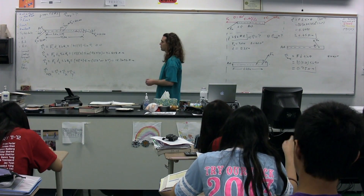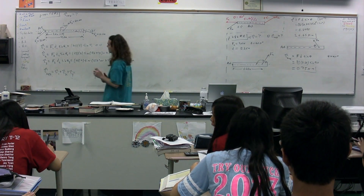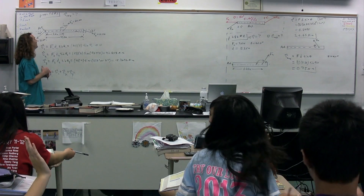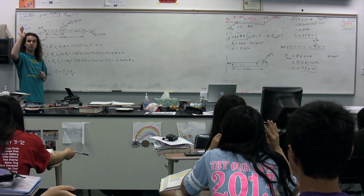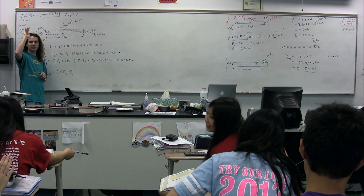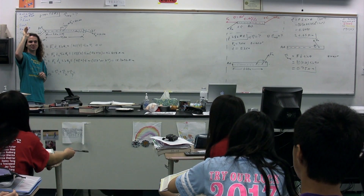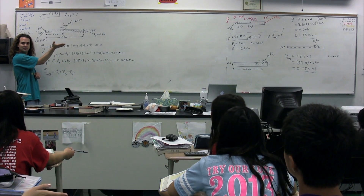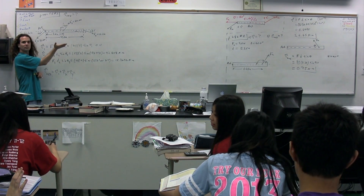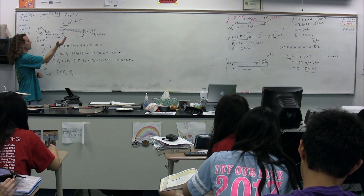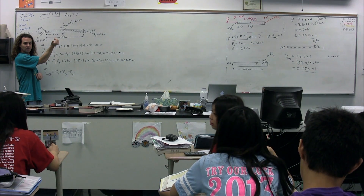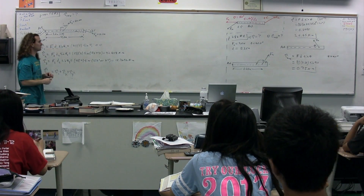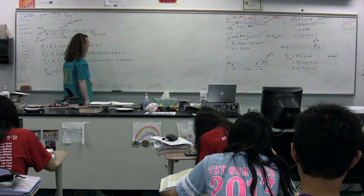Torque due to force 1 is clearly zero. For torque due to force 2, you start at the axis of rotation, go along the lever arm, then curl your fingers in the direction of force 2 — which points out of the board, which is positive. For torque due to force 3, we curl our fingers down, which puts our thumb into the board, which is negative. So we have positive 42.8 and negative 15.3.